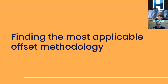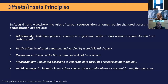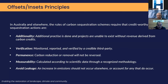Looking briefly at offset principles, which are set worldwide and have nothing to do with Australia: there must be an additional practice done that wouldn't happen without the revenue from carbon. It needs to be verified — monitored, reported, and then verified by a credible third party, i.e. an auditor. It must have permanence that will not be reversed. It must be measurable according to scientific data through a recognised methodology. And you can't increase emissions in order to achieve the sequestration — so you've got to avoid leakage.